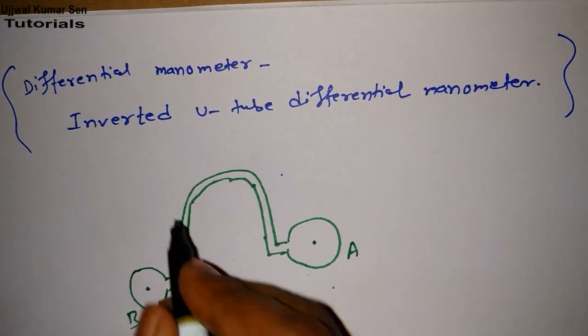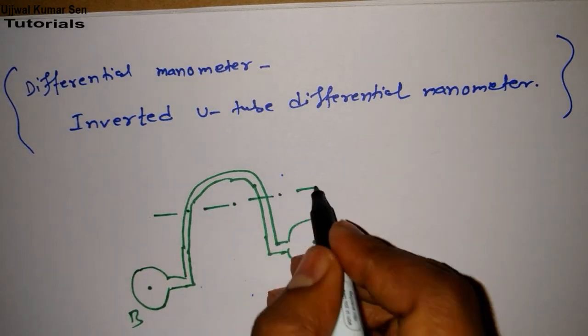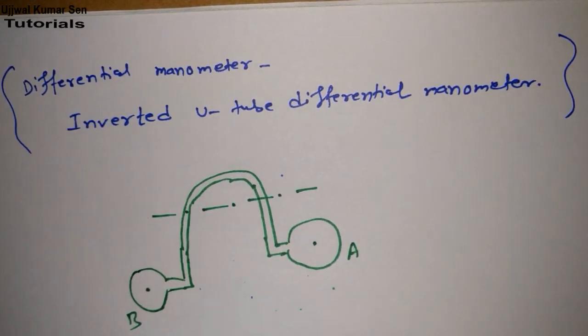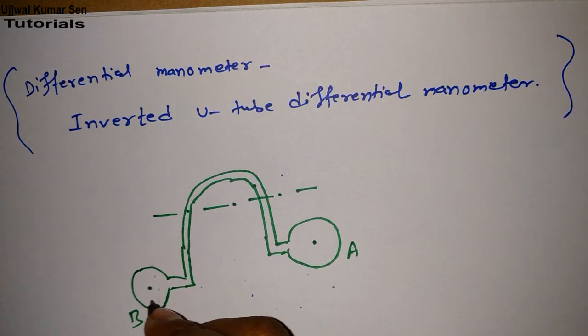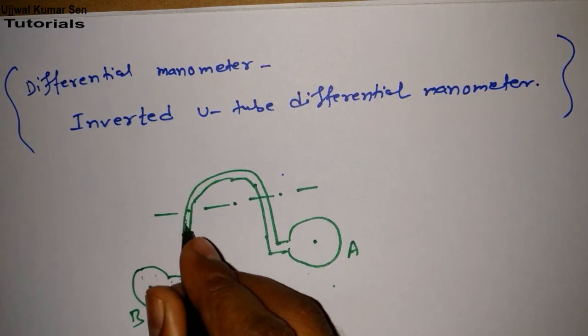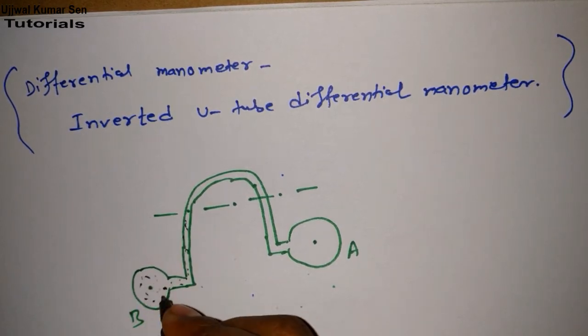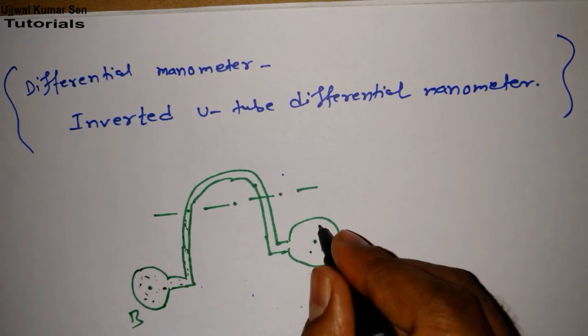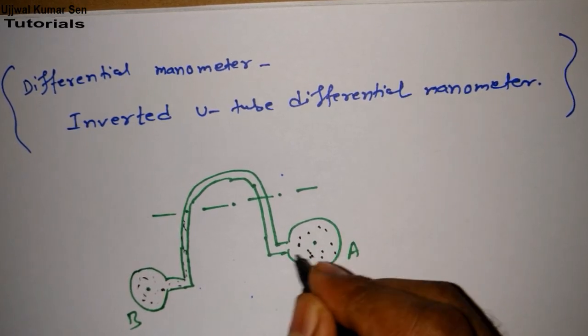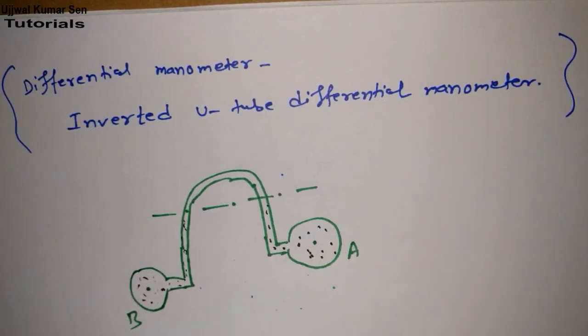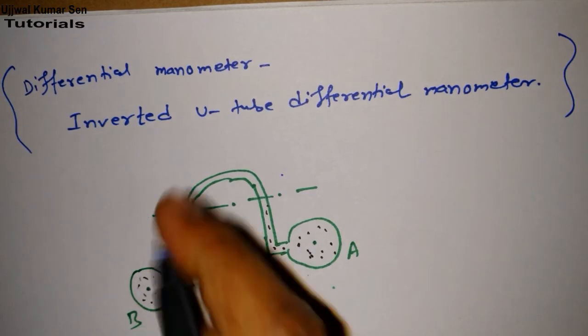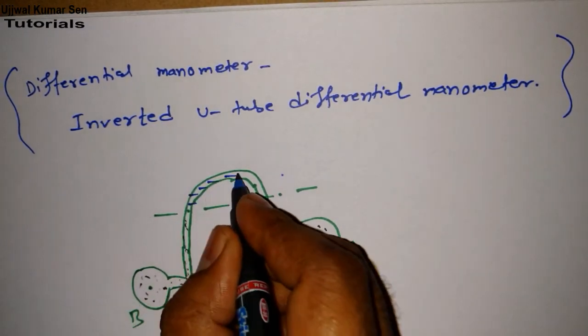We have to use different liquid. Here we have some liquid which is having different density, and for pipe A it is also having different density. But in this case we have to use light liquid.